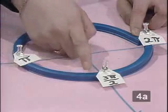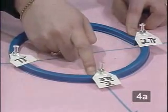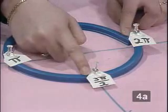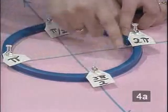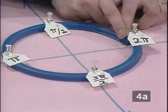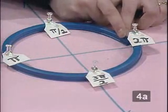Continuing around in a counterclockwise direction, if theta is 3 pi over 2 radians, then our arc length is 3 pi over 2 units, and all the way to one complete revolution of 2 pi radians, or 2 pi units.